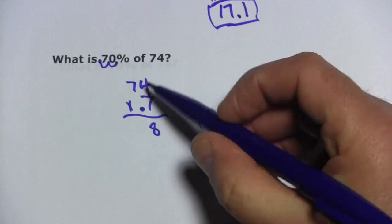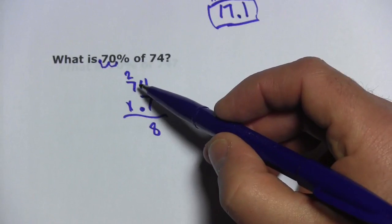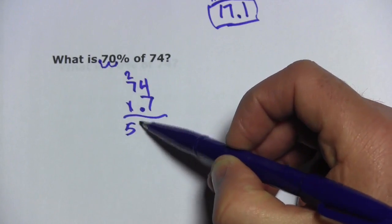7 times 4 is 28. 7 times 7 is 49. 50, 51. So, we got 518.